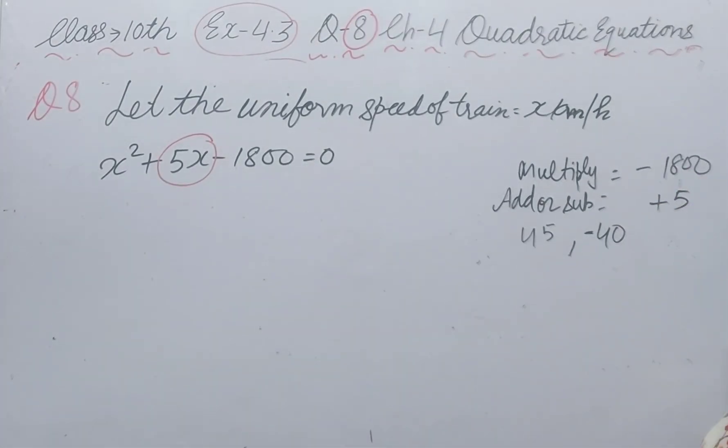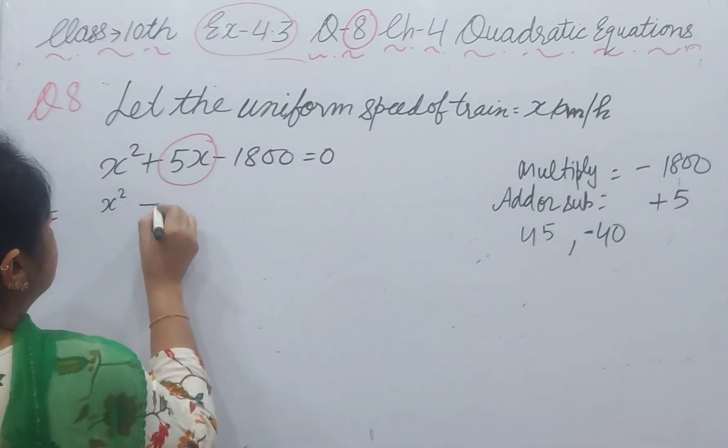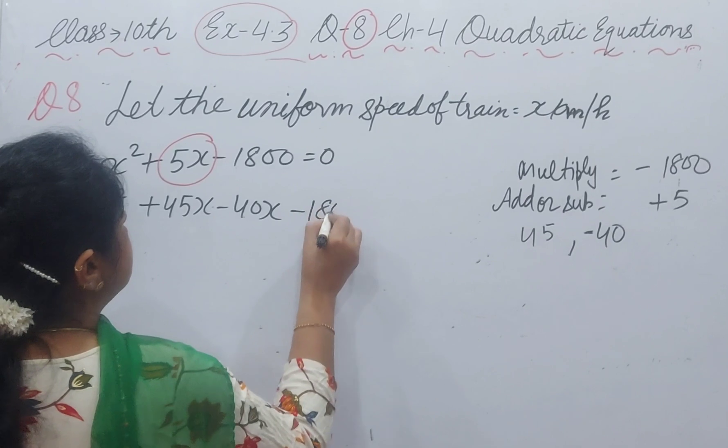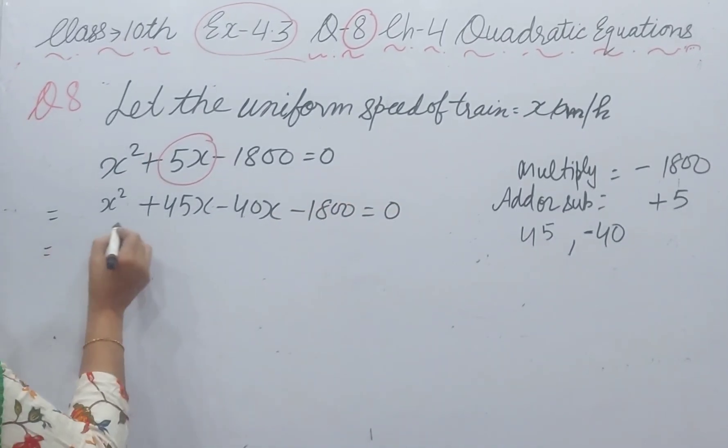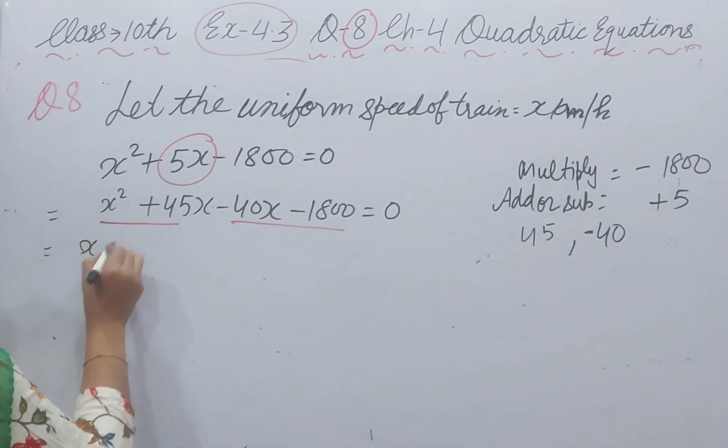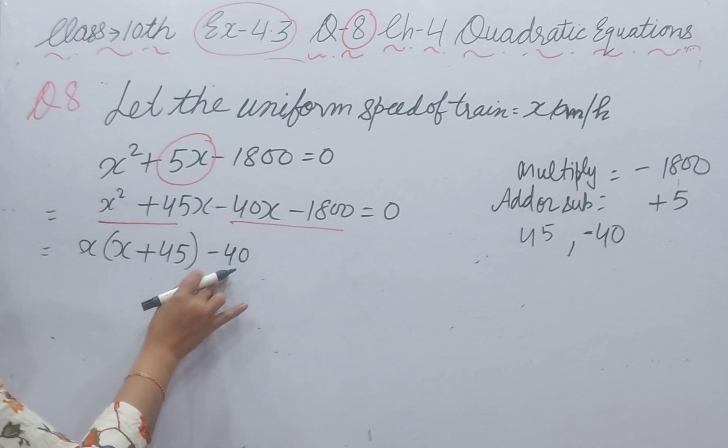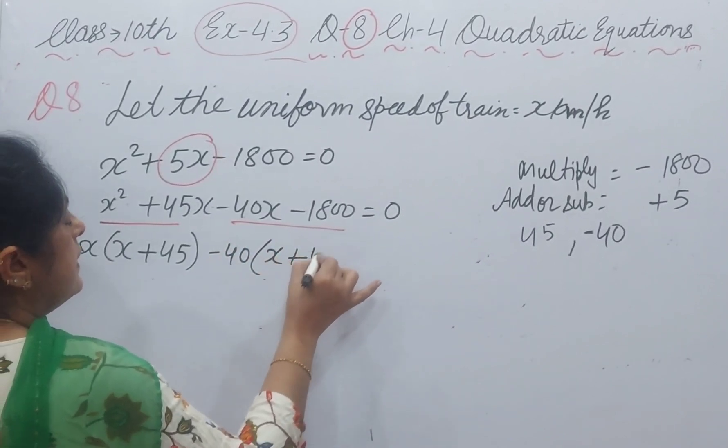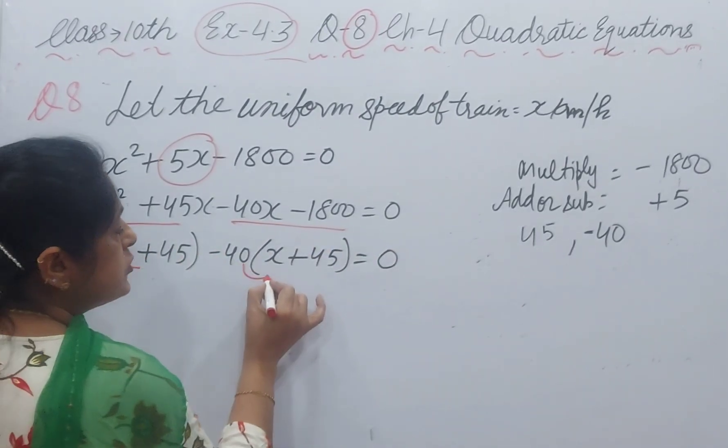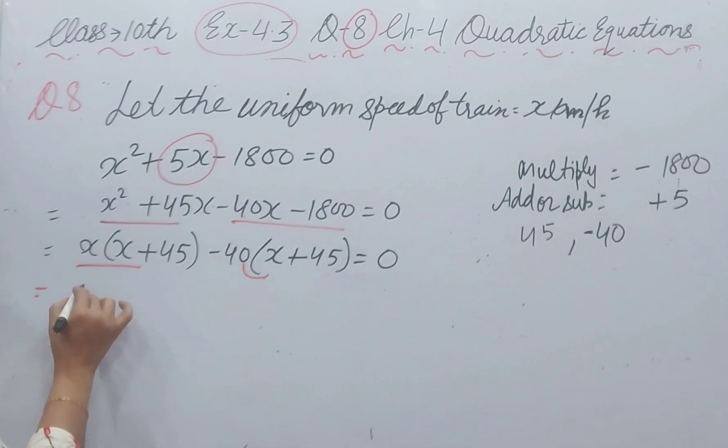We split this 5x: x square plus 45x minus 40x minus 1800 equal to 0. In these two terms and in these two terms, here x is common. You will get x plus 45 and minus 40. You take common, you will get x plus 45. Now, in these two terms, these are multiplied and these two are multiplied. And between them the minus sign is there. We will take x plus 45 as outside.